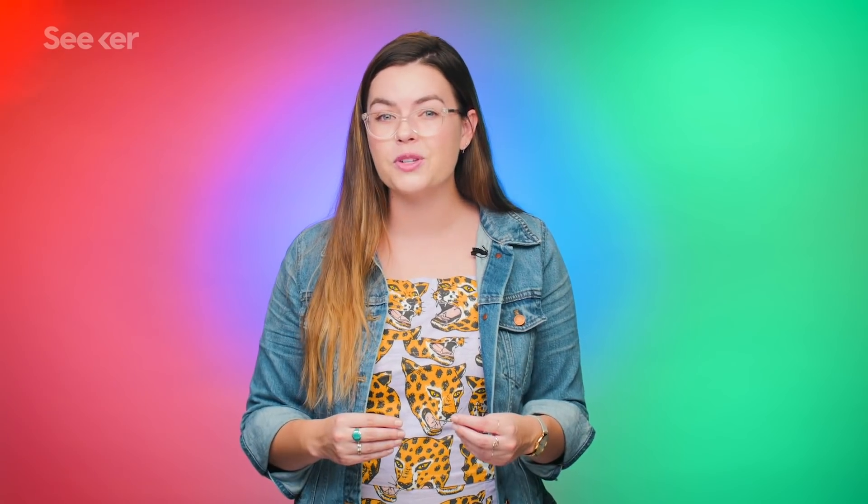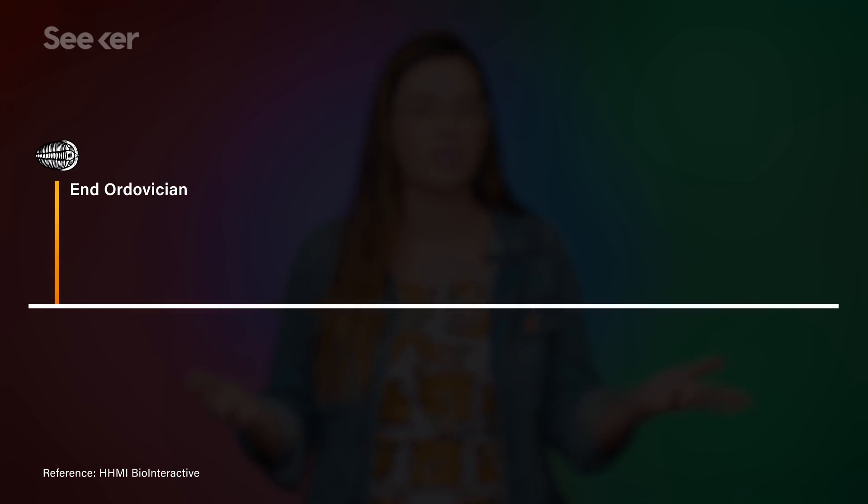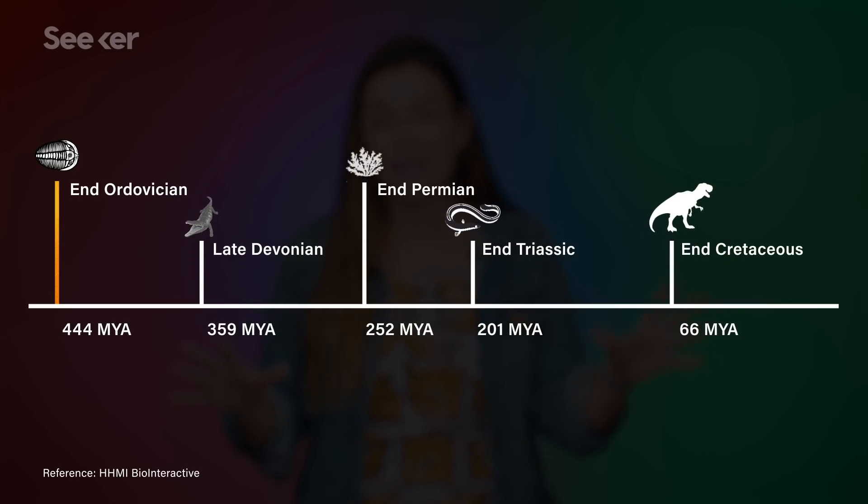Scientists think that a gamma-ray burst may have been behind the Ordovician mass extinction 450 million years ago. One of the big five extinction events that totally wiped out biodiversity on Earth. And thanks to radiation signatures recorded in the rings of a few ancient trees, it's thought that a GRB may have struck Earth as recently as the 8th century.